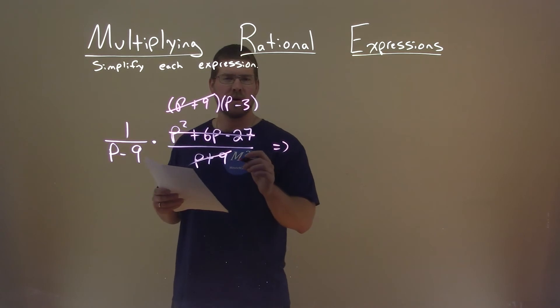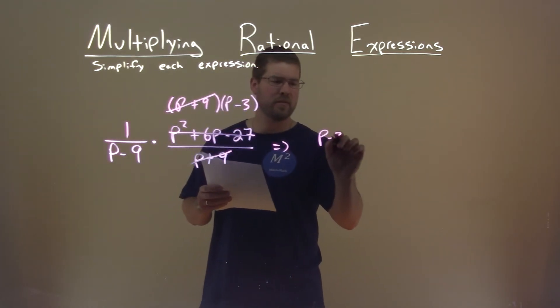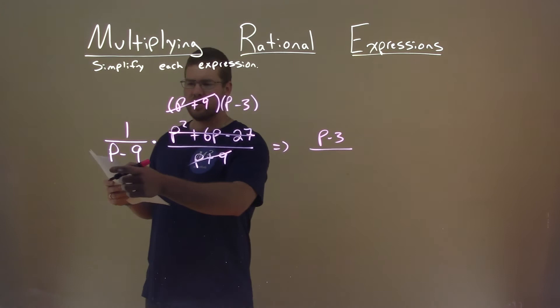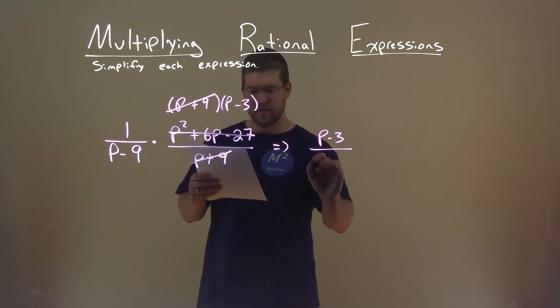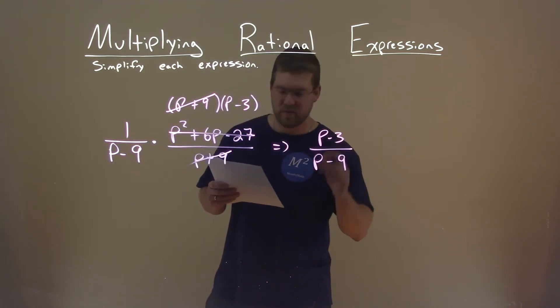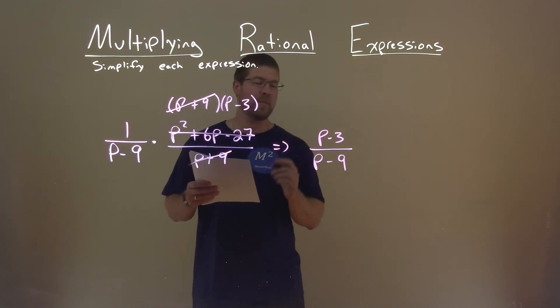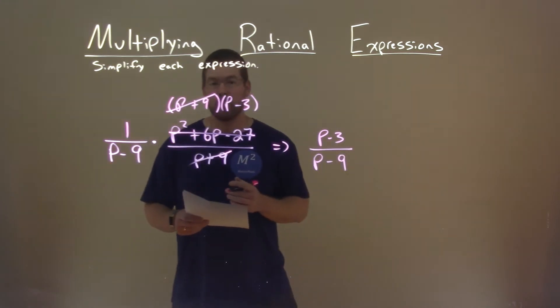So now let's write it out. 1 times p minus 3 is, well, p minus 3, divided by p minus 9 is just left over here. And so that's it. p minus 3 divided by p minus 9 is our final answer.